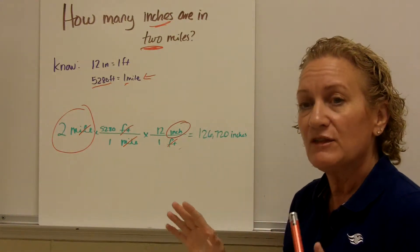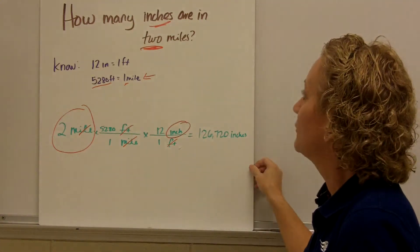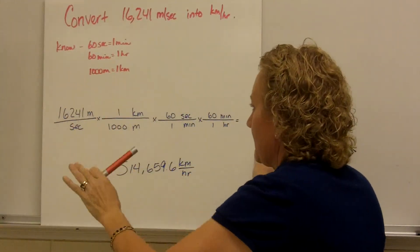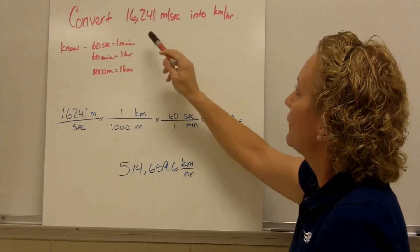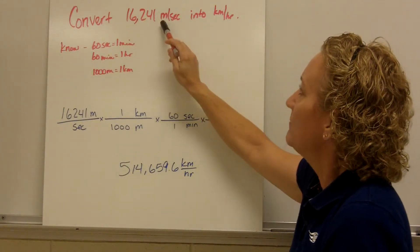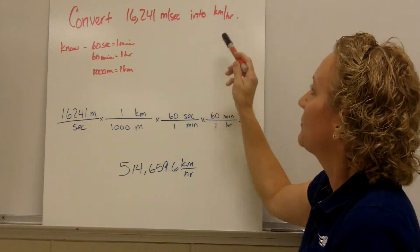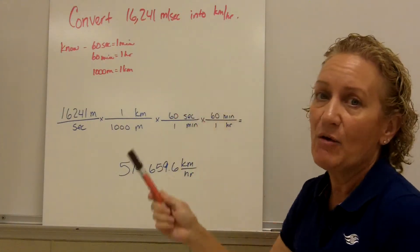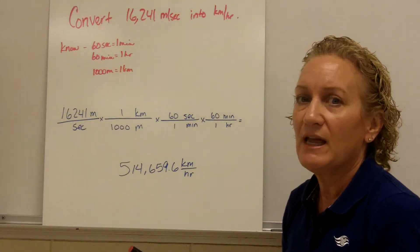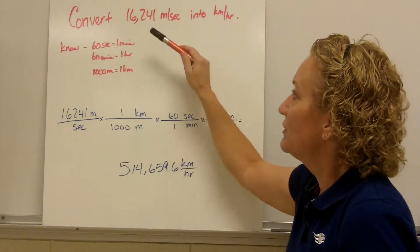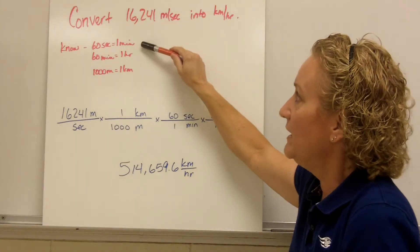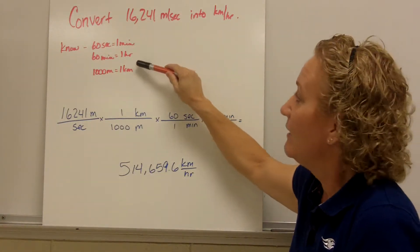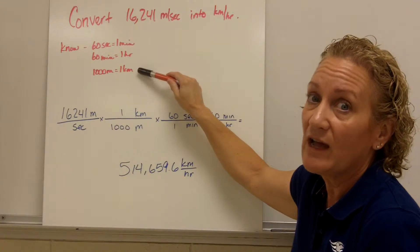We're going to do one more example. This one's a little more involved, so hang in there with me for just another minute or two. All right, so we're going to convert 16,241 meters per second into kilometers per hour. So there's two things we're converting, meters into kilometers and seconds into hours. So this one's going to be a little bit longer, no more complicated. Just keep your units straight, and you'll be fine. So let's do some conversion factors. I know 60 seconds is one minute. I know 60 minutes is one hour. And I know 1,000 meters is one kilometer. If you didn't know this conversion, that's one of those ones you need to have in your head, so make sure you memorize it.